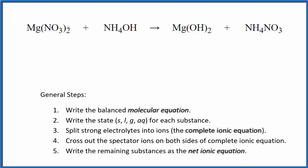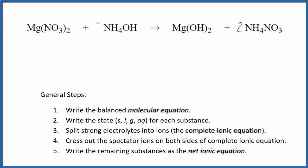To balance it, I see I have two nitrate ions on the left and just one on the right. Let's put a two in front of the ammonium hydroxide. Now I have two ammonium ions on the right and just one on the left, so put a two there. That balances the ammonium ions; we also have two hydroxide ions on each side. Magnesium is balanced. This is the balanced molecular equation.